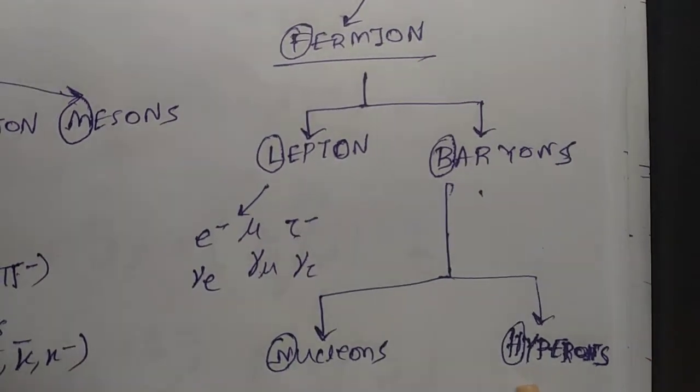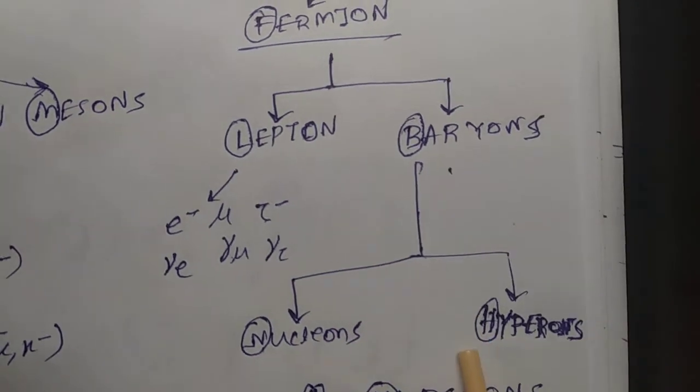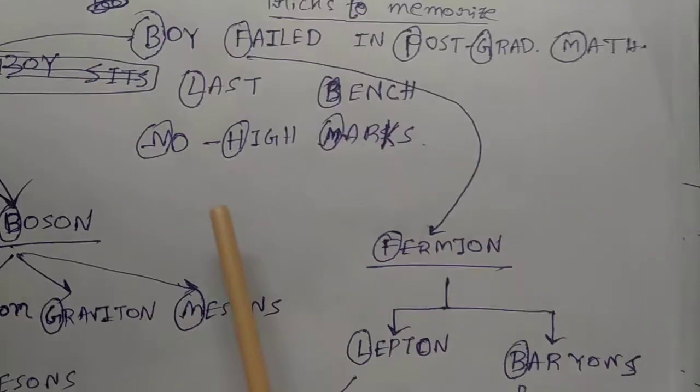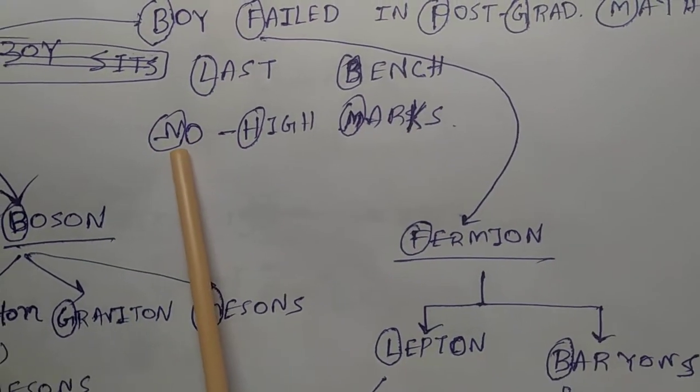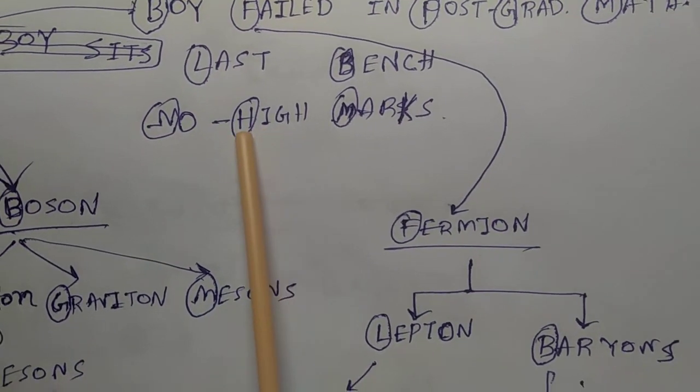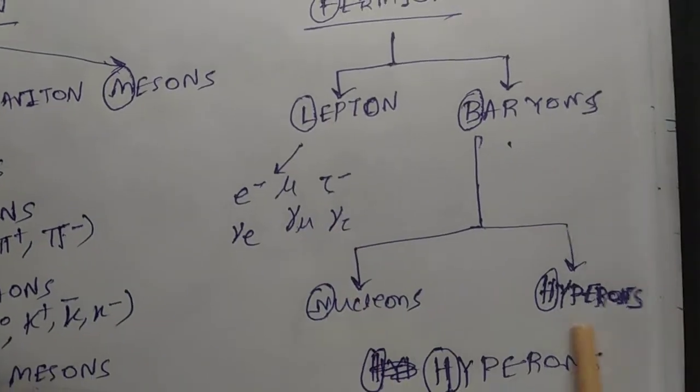There are two types of classification: nucleons and hyperons. How to memorize them? The boy used to sit in the last bench as usual, no high marks. N for nucleons, H for high marks, H for hyperons.